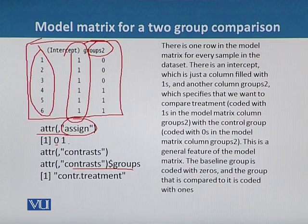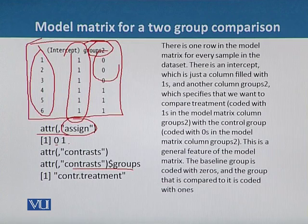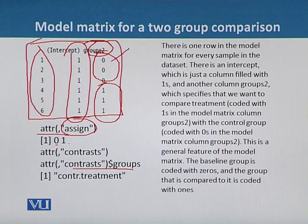This is a general feature of the model matrix: the baseline group is coded with zeros and the group that is compared to it is coded with ones. So the control samples are coded with zeros and the treated samples are coded with ones.